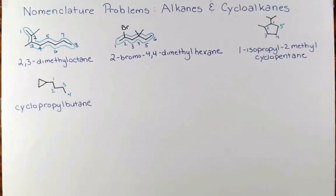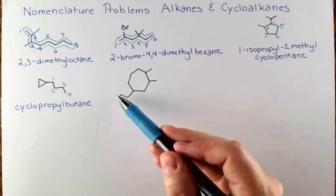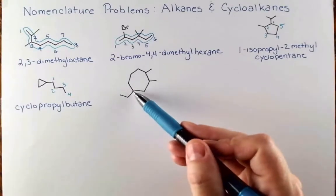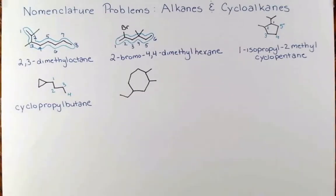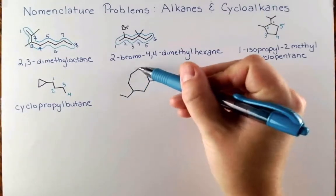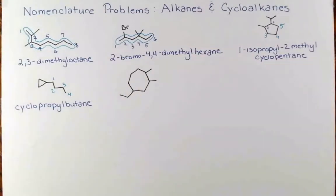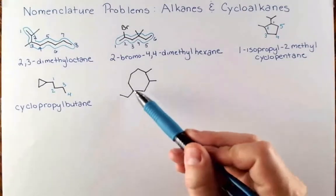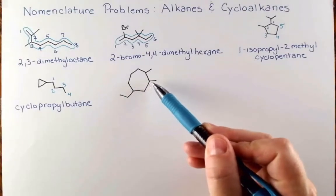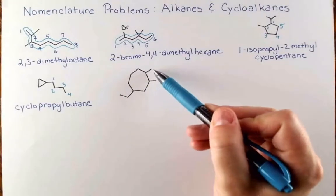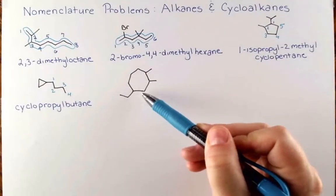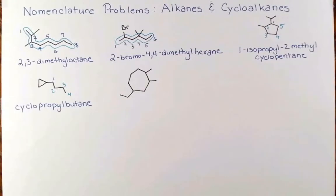Next let's look at a ring with more than two substituents. I'm going to start counting at the ethyl group to keep track. Counting around the ring: 1, 2, 3, 4, 5, 6, 7 — so I have a cycloheptane. Now we need to figure out how to number this. We want as many alkyl groups as possible to get low numbers. Starting numbering at a methyl group and going in the direction 1, 2, 3, 4, the substituents get the lowest numbers possible.